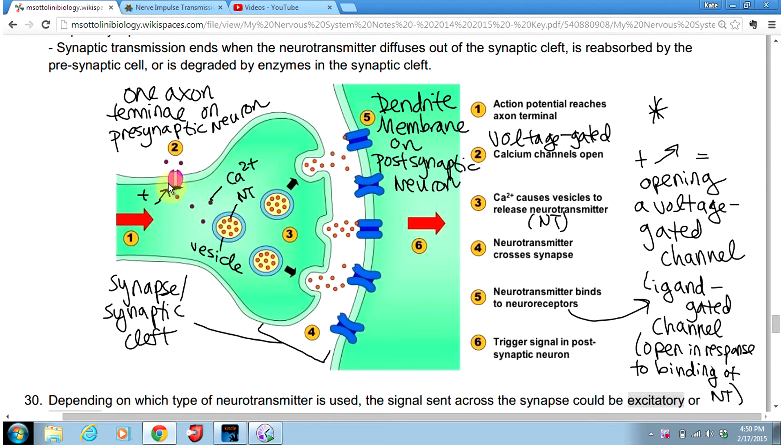we're showing an axon terminal, or axon bulb, at the end of one neuron. We'll call that the presynaptic neuron because it comes before the synapse. I'm going to label the axon terminal on the presynaptic neuron. I'll also label the space between the two neurons, the synapse or synaptic cleft. On this side, we're looking at the dendrite membrane on the postsynaptic neuron—postsynaptic meaning it comes after the synapse. Remember, a dendrite receives signals.